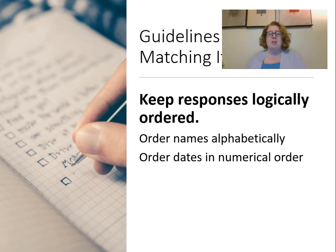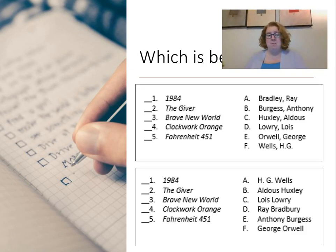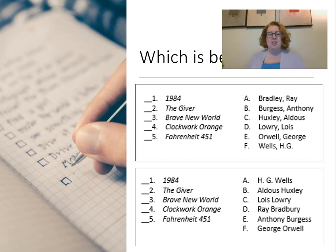Keep the responses ordered logically. We want to make it easy for students to find the correct answer when they know it. You don't want students wasting their time searching through the list. Put names in alphabetical order and dates in numerical order. In this example, if I remember that Bradbury wrote Fahrenheit 451, it's really easy to find Bradbury in an alphabetically ordered list.